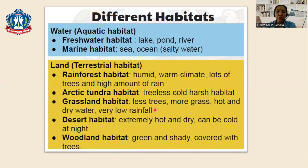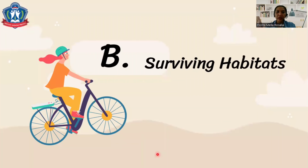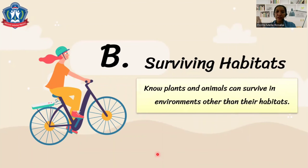The desert is extremely hot and dry and can be cold at night. The woodland is green and shady, covered with trees. Now the second topic: surviving habitats. You will know that plants and animals can survive in environments other than their natural habitats. You can open the student's book page 66 to 71.